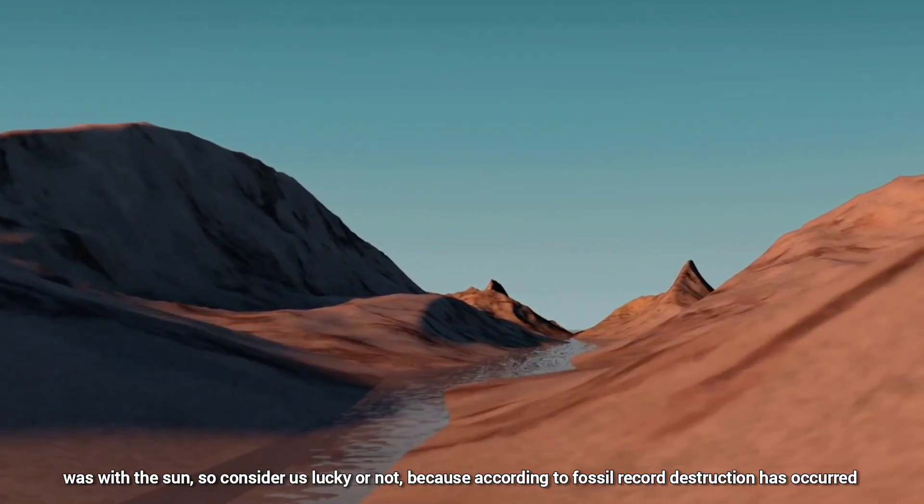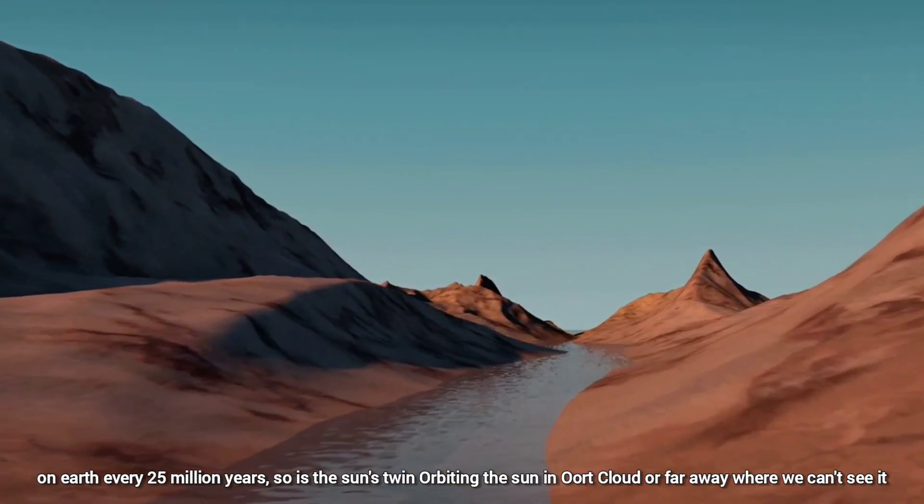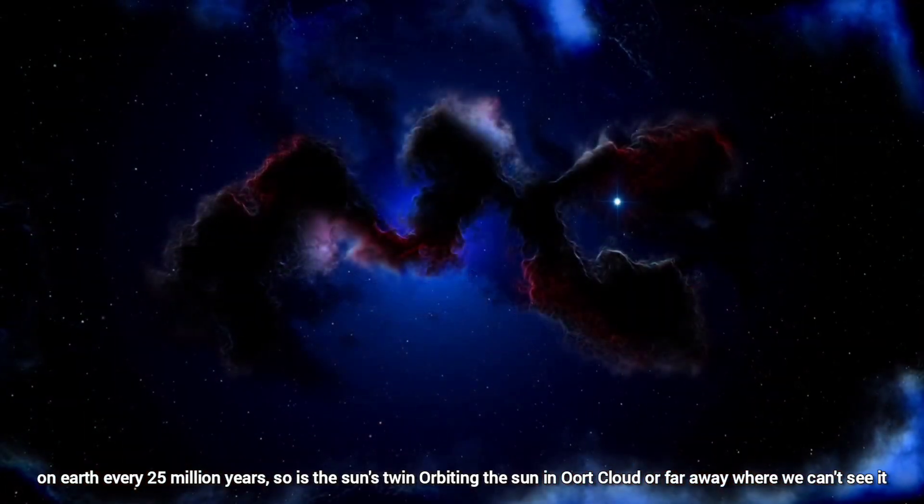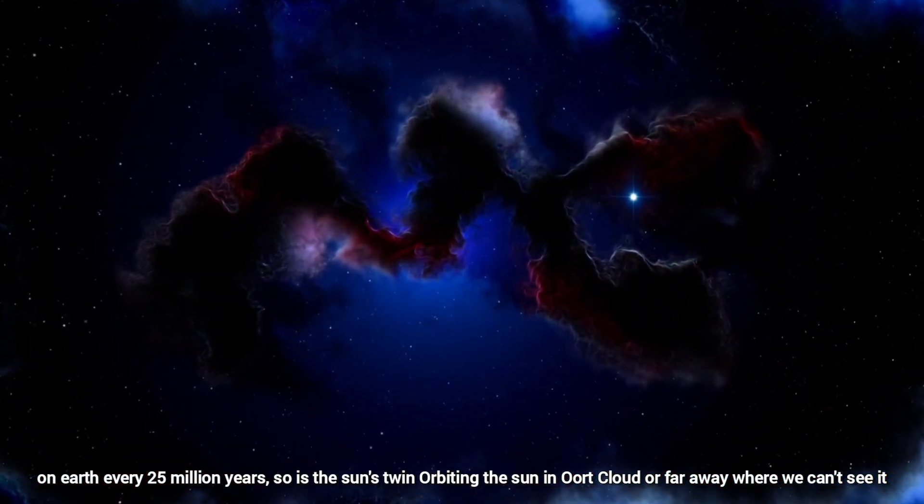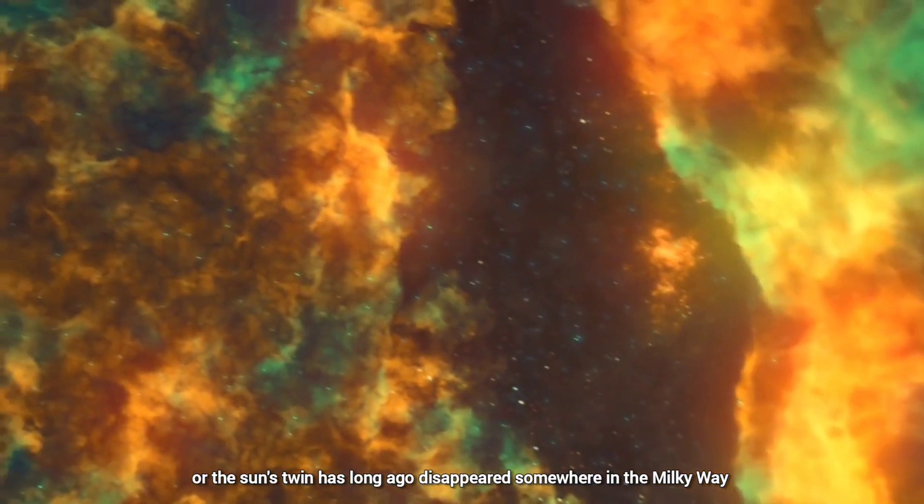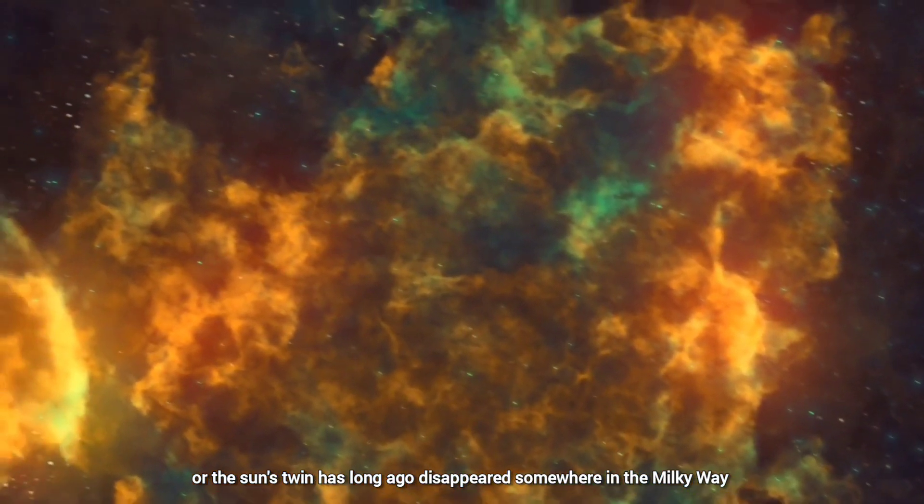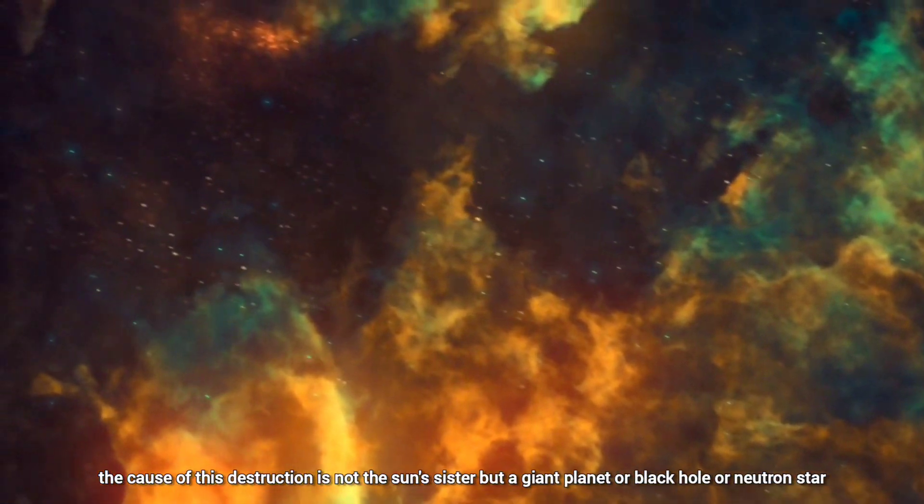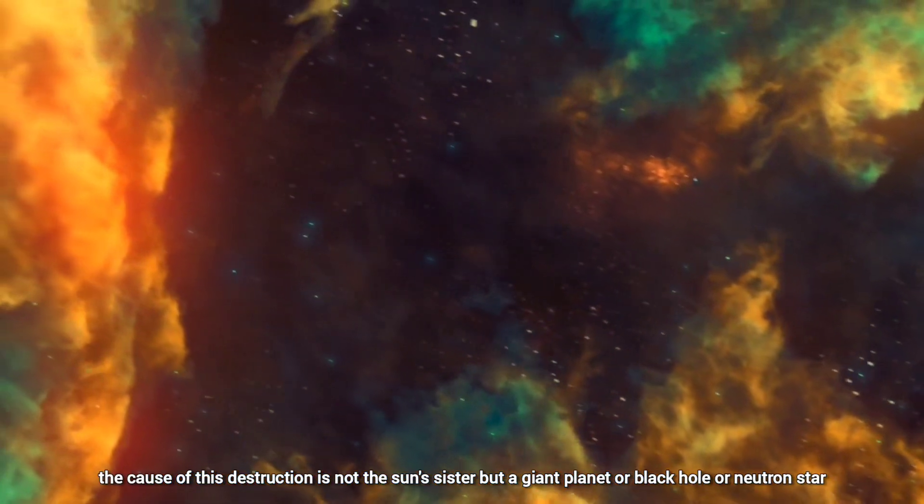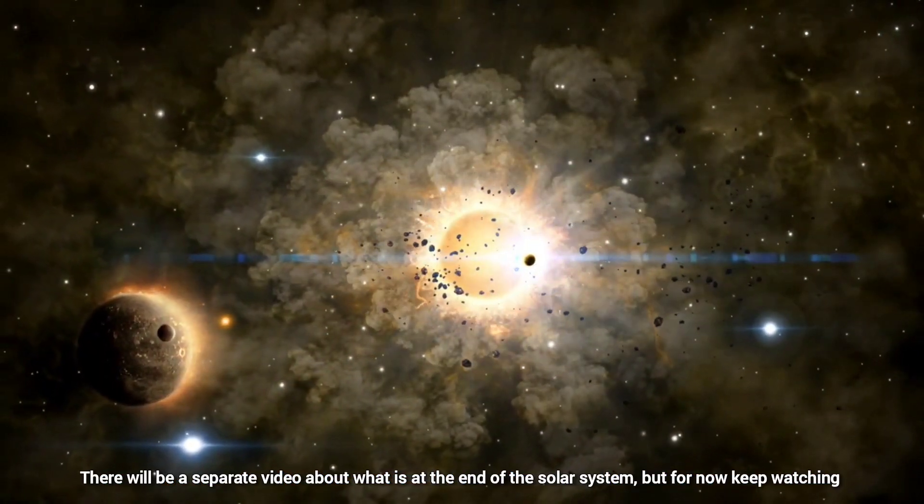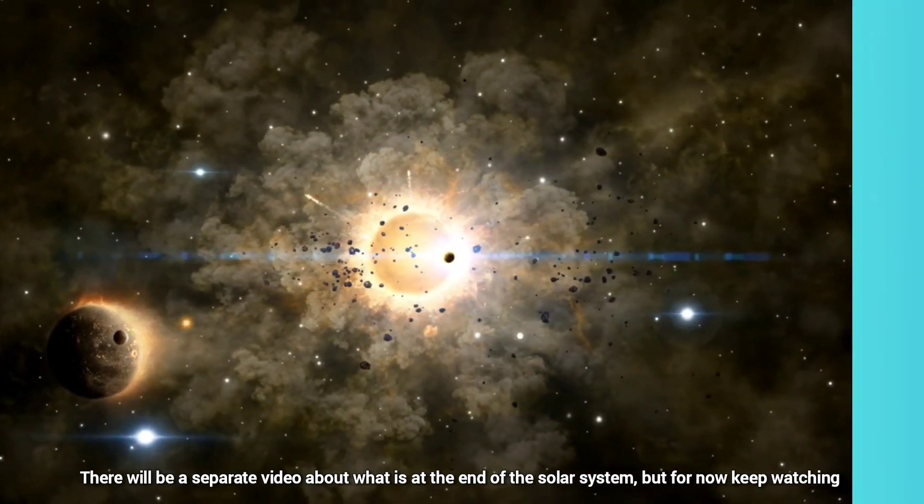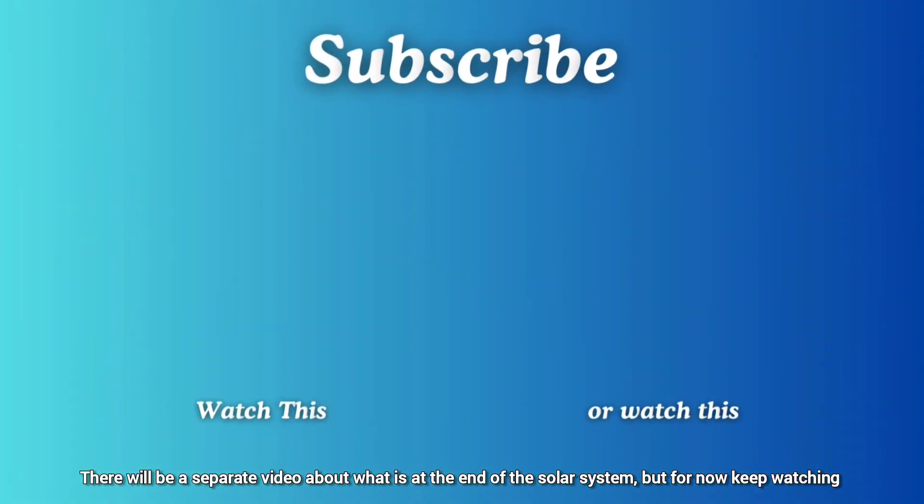So consider us lucky or not? Because according to the fossil record, destruction has occurred on Earth every 25 million years. So is the Sun's twin orbiting the Sun in the Oort Cloud? Or far away where we can't see it? Or the Sun's twin has long ago disappeared somewhere in the Milky Way? The cause of this destruction is not the Sun's sister, but a giant planet or black hole or neutron star. There will be a separate video about what is at the end of the solar system. But for now, keep watching some of the scariest planets in space or some real pictures of our solar system.